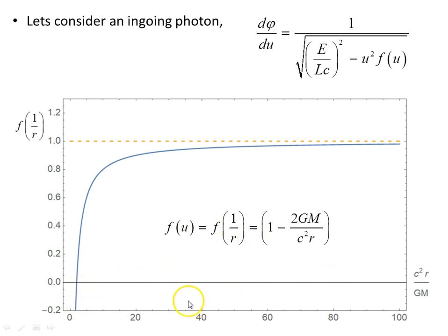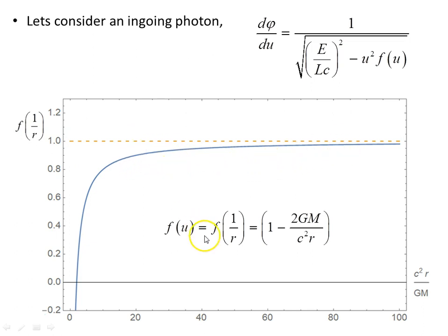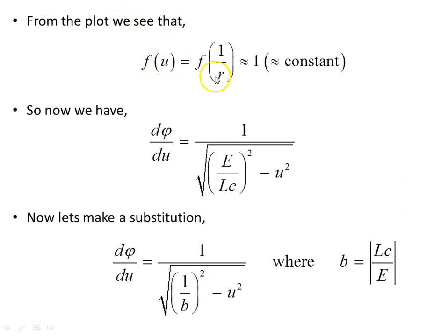From the plot, f(u) = f(1/r) is approximately 1 across almost all r values — only for small radii does it deviate, and not by a great deal. So as an approximation, we set f(u) ≈ 1. Going back to our expression for dφ/du, we remove f(u) since it equals 1. This means the equation is now exactly integrable, which is very helpful.